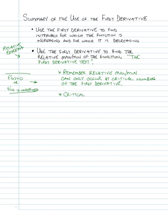Critical numbers do not ensure a relative maximum or a minimum. So that means even if we have a critical number, we don't know we have a maximum or a minimum — we have to test to find that out.